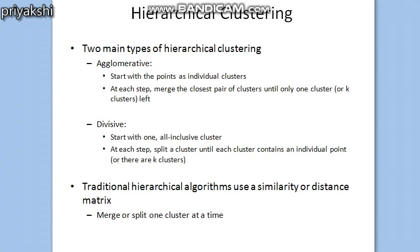Hierarchical clustering methods can be divided into two main groups: one is agglomerative hierarchical clustering and the other is divisive hierarchical clustering. In agglomerative hierarchical clustering, we start with the points as individual clusters and at each step we are going to merge the closest pair of clusters.